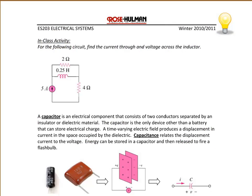Let's try an example. For the following circuit, find the current through and voltage across the inductor. We have a 0.25 Henry inductor and want to find VL and IL. Since this is a constant current, we can model this circuit under DC conditions. Under DC conditions, I can redraw this with the inductor represented as a short circuit.